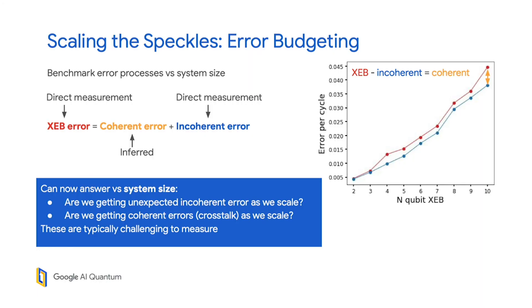We can answer these questions now versus system size: are we getting unexpected incoherent errors as we scale? And we can also answer, are we getting coherent errors, for example crosstalk, as we scale? Typically, these are quite challenging to measure.